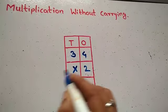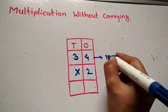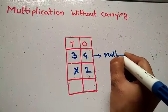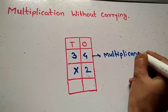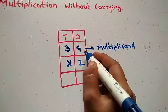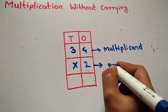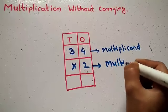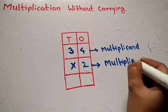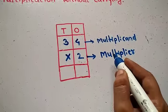Now here, 34 is the multiplicand and 2 is the multiplier.